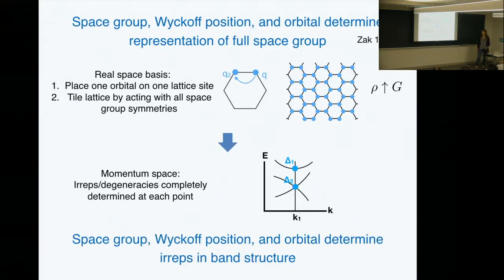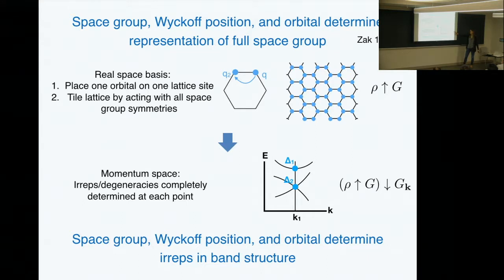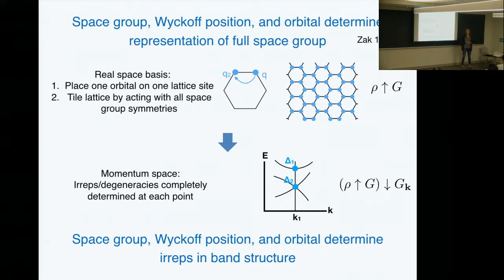In a band structure, at each K-point there are symmetries that leave that K-point invariant, and you label bands at that K-point by irreps of the little group at K. So I can reduce my induced representation to the little group at each K-point, and that tells me what the labels are at K. If I know just the data about atom arrangement and orbital content in my space group, I automatically get all these labels throughout the entire Brillouin zone. What I've described so far is really just a set of flat bands which transform in some way — it doesn't have a Hamiltonian or energy — but I know all their labels.